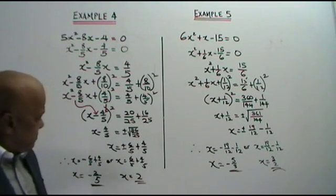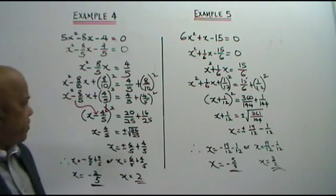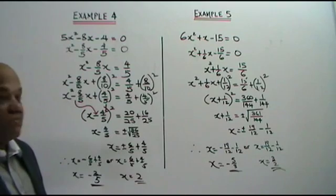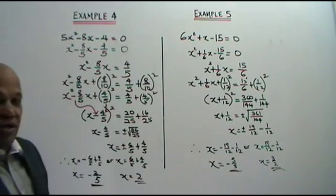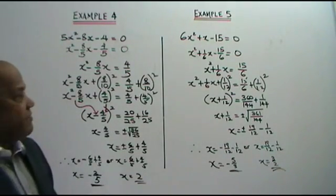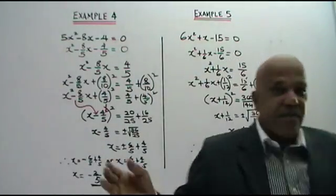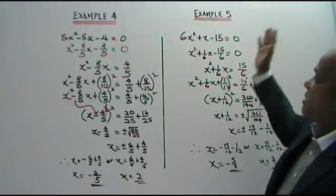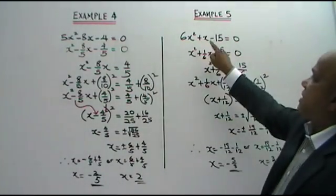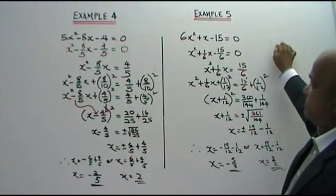Very straightforward. Now let's look at example 5. You are given 6x squared plus x minus 15 equals to 0.